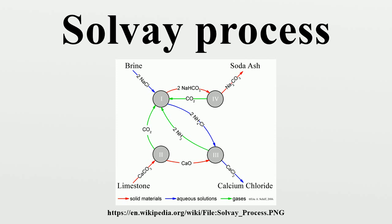In the modified Solvay process developed by Chinese chemist Hou Di Bang in the 1930s, the first few steps are the same. However, the CaCl2 is supplanted by ammonium chloride. Instead of treating the remaining solution with lime, carbon dioxide and ammonia are pumped into the solution. Then sodium chloride is added until the solution saturates at 40 degrees Celsius. Next, the solution is cooled to 10 degrees Celsius. Ammonium chloride precipitates and is removed by filtration, and the solution is recycled to produce more sodium carbonate. This process eliminates the production of calcium chloride. The by-product ammonium chloride can be refined and used as a fertilizer, and may have greater commercial value than CaCl2, thus reducing the extent of waste beds.